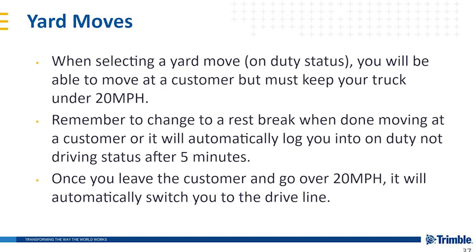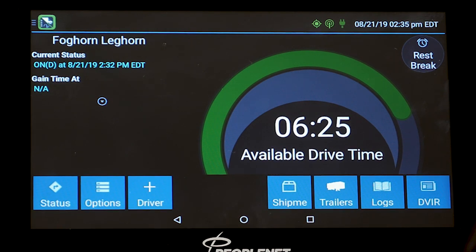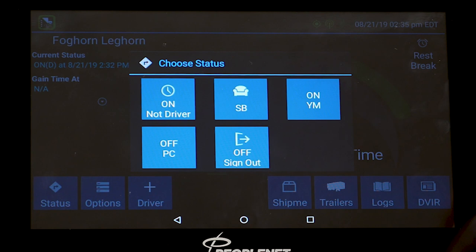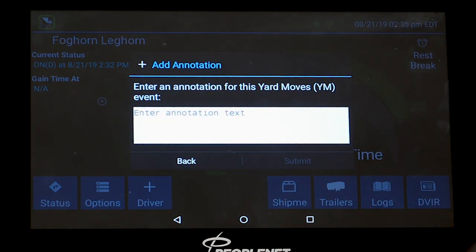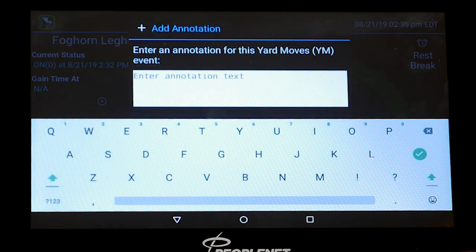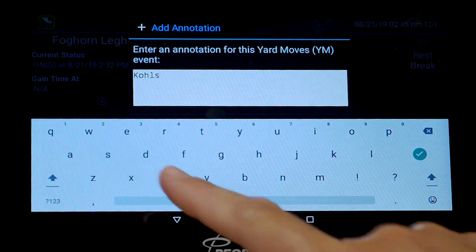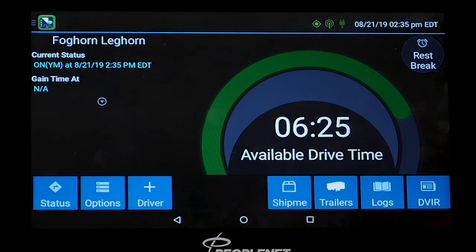For yard moves: when selecting a yard move, which is an on-duty status, you will be able to move at a customer but must keep your truck under 20 miles per hour. Remember to change to a rest brake when done moving at a customer, or it will automatically log you into on-duty not driving status after five minutes. Once you leave the customer and go over 20 miles per hour, it will automatically switch you to the drive line. It will also pop up prompting you to enter a yard move annotation — enter the customer location you're at. From this screen, click on status, go to on-duty yard move. Your log is going to be stamped with your location. Enter the customer name, such as Kohl's in Findlay, Ohio, and submit. That's all you have to do for yard move.